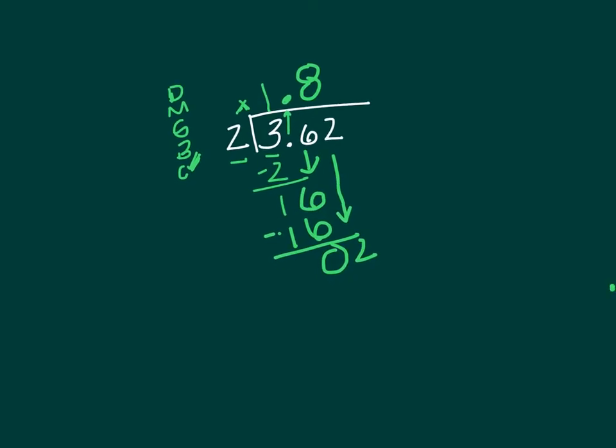Now 2 goes into 2 one time. 1 times 2 is 2, we subtract that, we get no remainder, so we are good to go. So our answer is 1 and 81 hundredths, right?